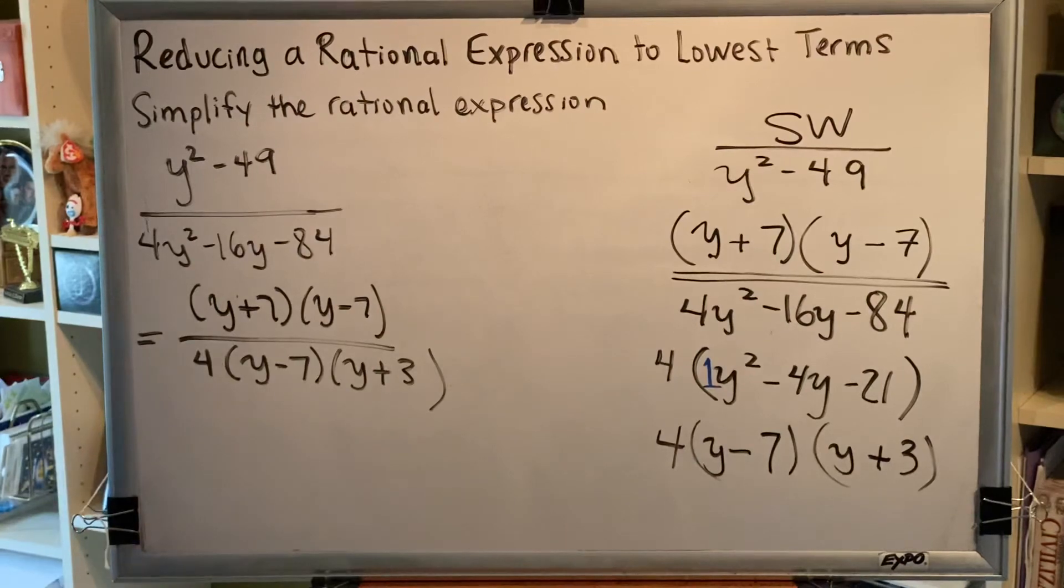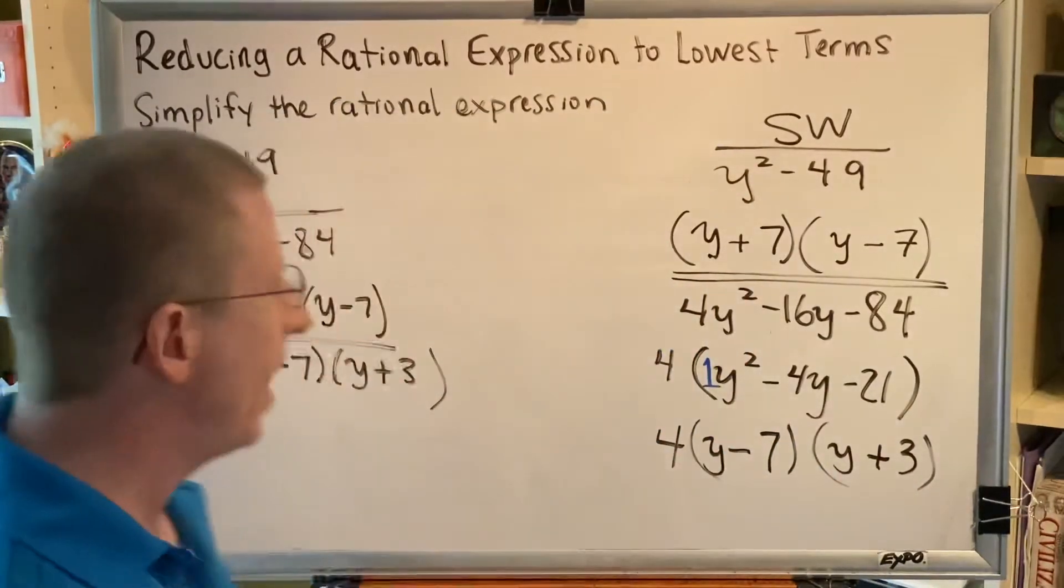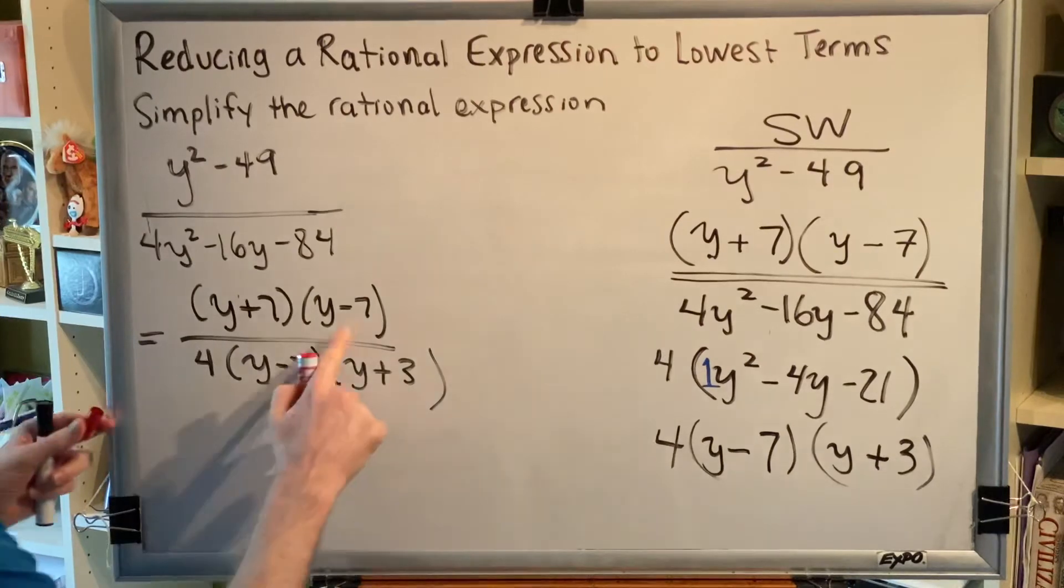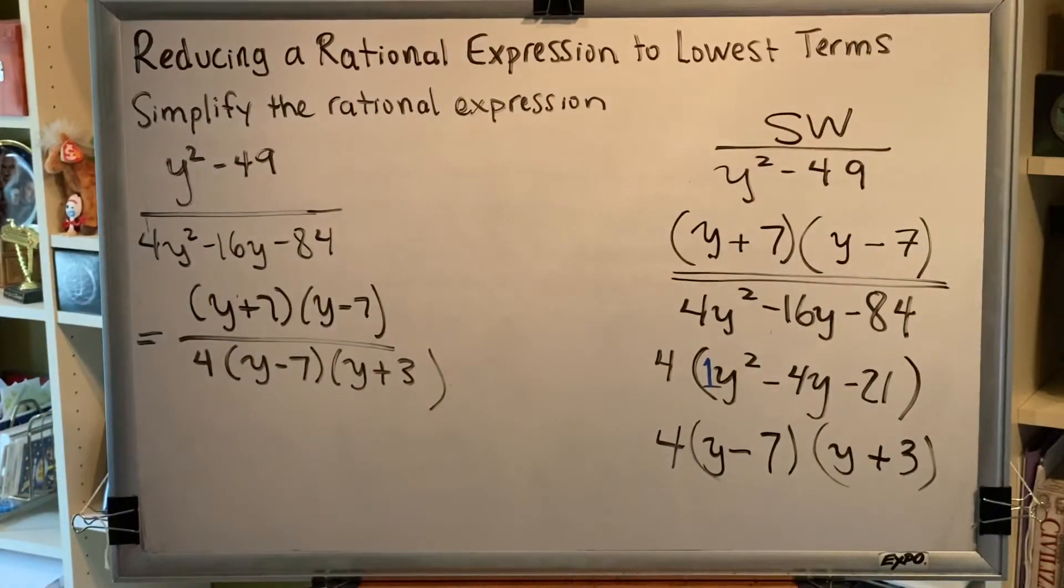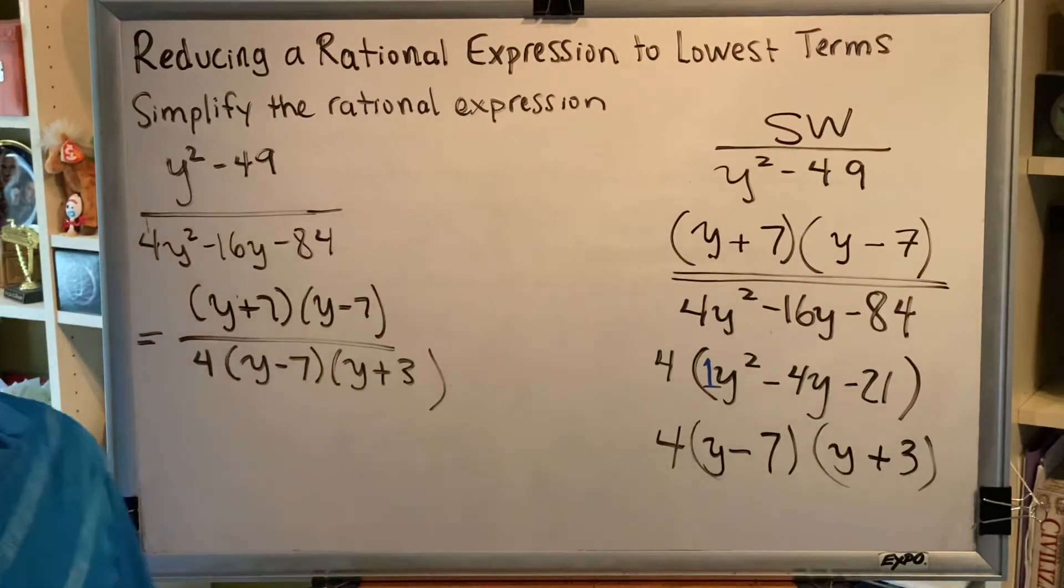Step 2 is to look for factors that match top and bottom and cancel those factors. I see a y plus 7 up top and a y minus 7 down below. So I just have to verify that they're factors. And if they are, I can cancel them. Factors are things that are being multiplied, not added or subtracted.